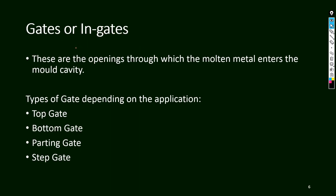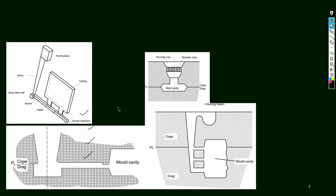There are different types of gates depending upon the application. The four types are: top gate, bottom gate, parting gate, and step gate. We need to identify which one is top gate, which one is bottom gate, which one is parting gate, and which one is step gate.